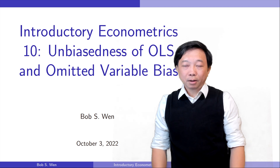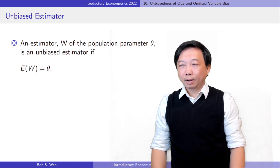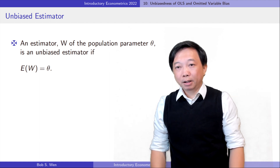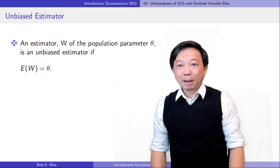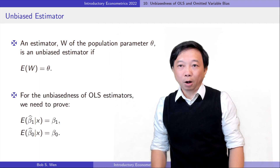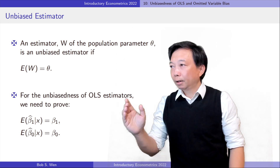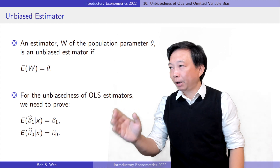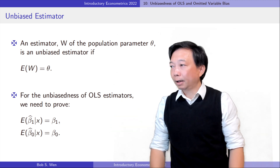What does unbiasedness mean? An estimator w of the population parameter theta is an unbiased estimator if its probability distribution has an expected value equal to the population parameter. For the unbiasedness of the OLS estimates, we need to prove that the expected value of the slope estimator and the intercept estimator conditional on x equal the population parameters beta 1 and beta 0.